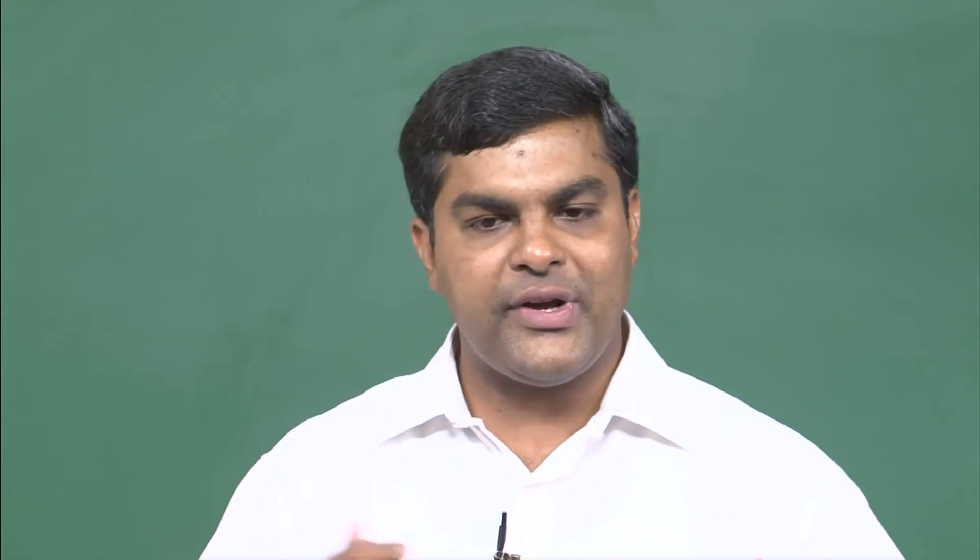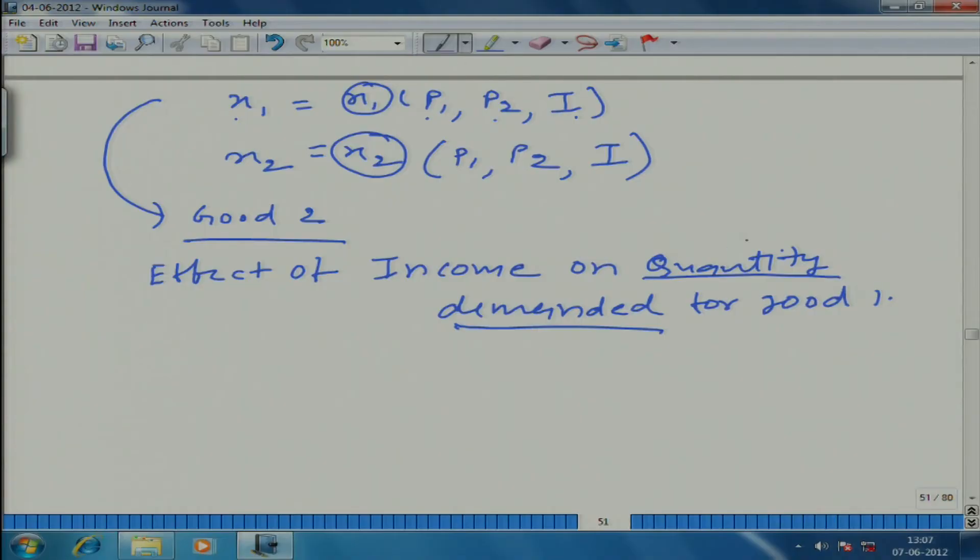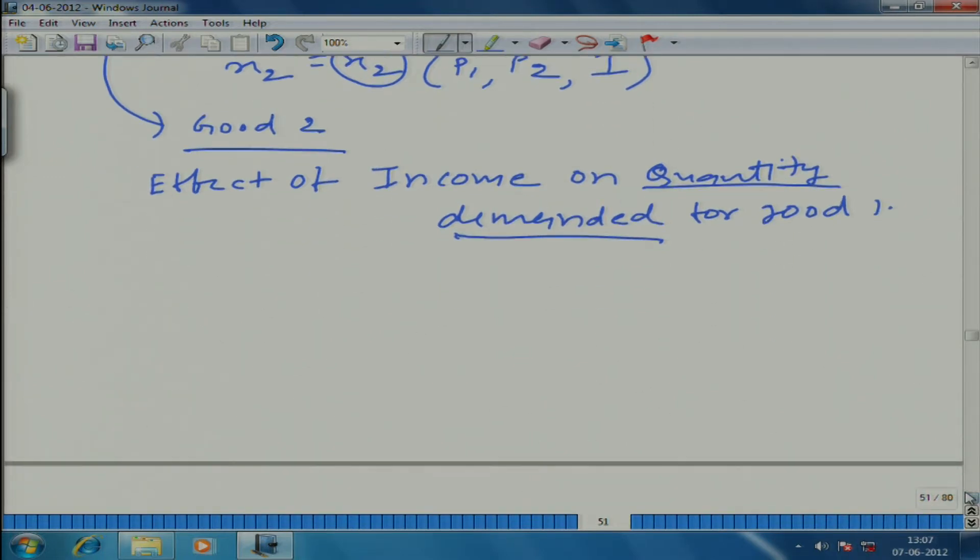He has certain tastes and preferences that we have translated into a utility function and indifference curves, and he has some budget constraints. Based on these two, he figures out how to maximize his utility to get the maximum level of satisfaction — how much of good 1 he should consume. That optimal level is his quantity demanded for good 1; it is not just any quantity demanded.